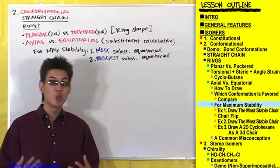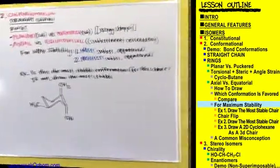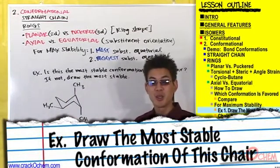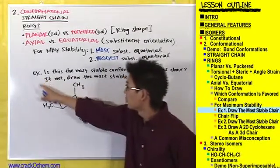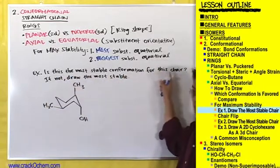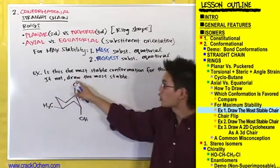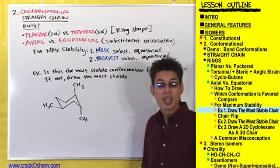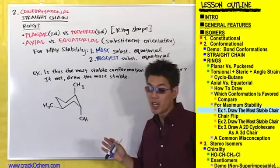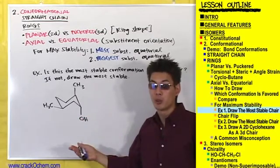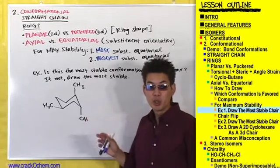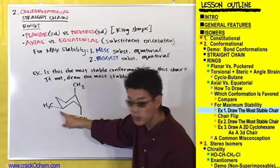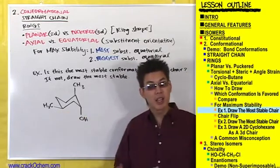Let me write up a typical question your professor might ask you. Your professor can ask something like: is this the most stable conformation for this chair? If not, draw the most stable. He'll draw one form of the chair and ask if it's the most stable, and if it's not, you draw the most stable form. In this chair, you'll notice that we have substituents that are axial, axial, axial, and equatorial.